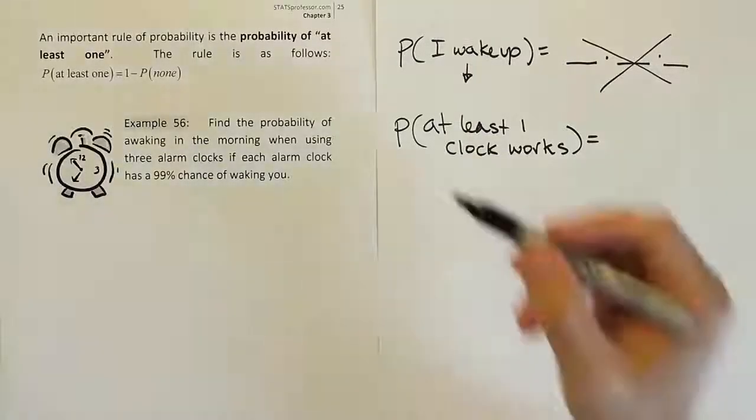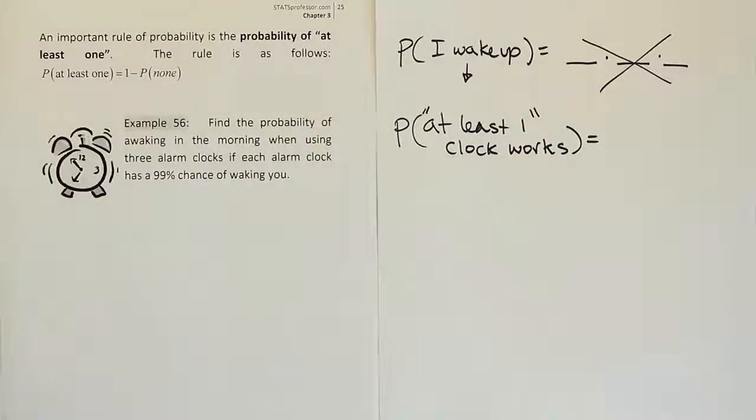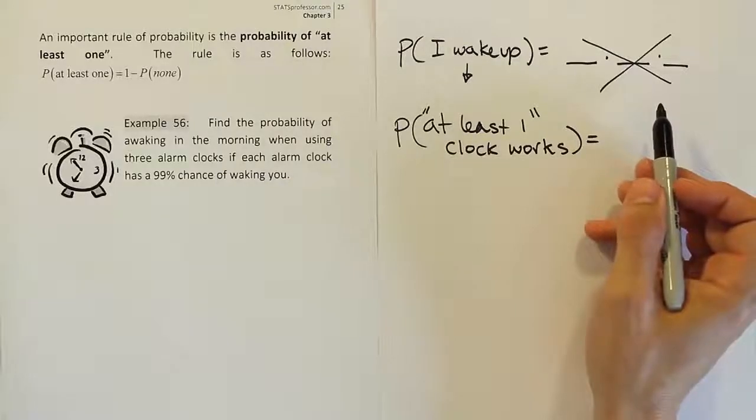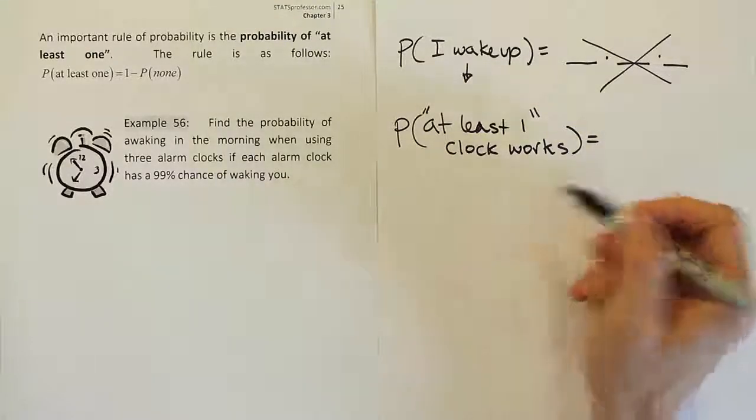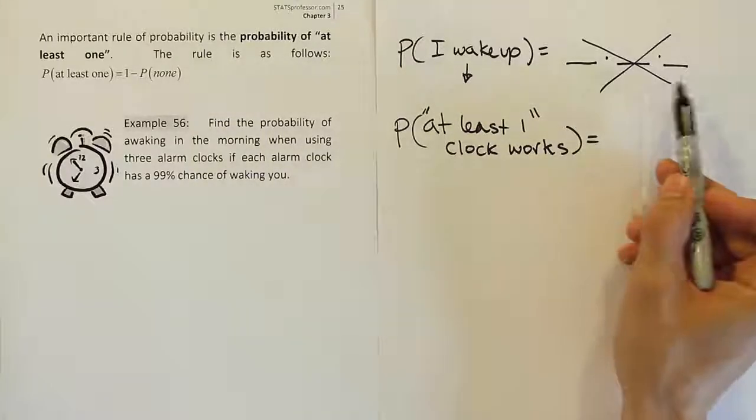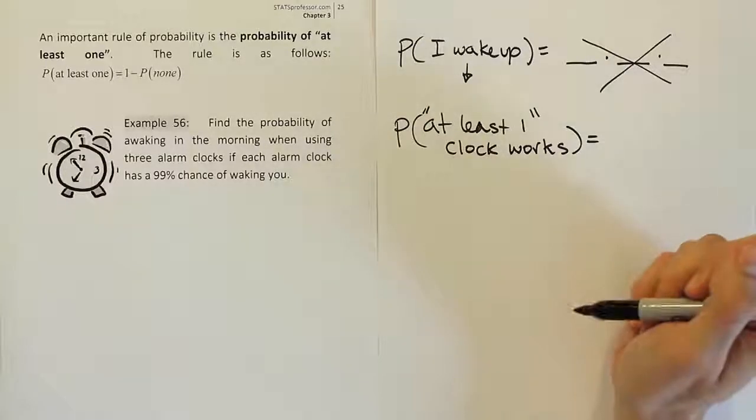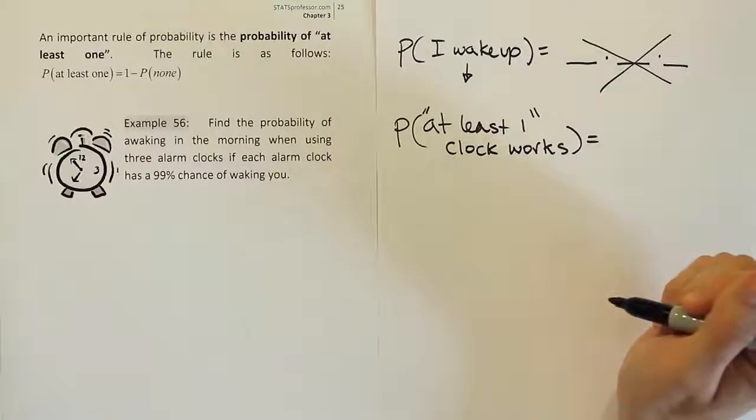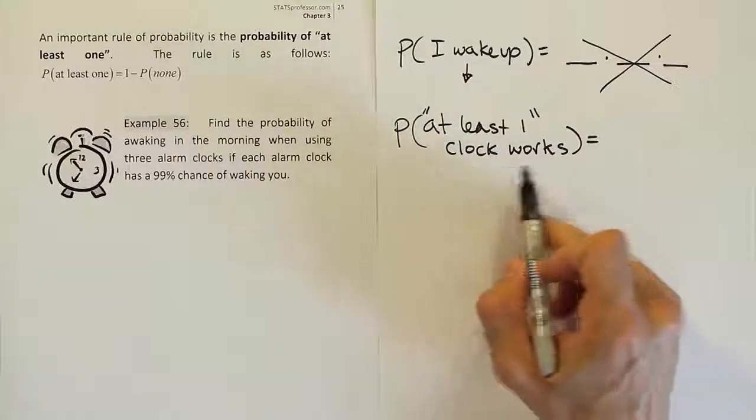If you want to go through those very quickly, let's do it. It would be the first clock working and the other two not. The second clock working and the other two not. The third clock working and the other two not. Or the first and the second work. Or the first and the third. Or the second and the third. Or finally all three work. Those are the seven different ways that we could wake up using three alarm clocks. So this statement actually captures all of those. And now the reason why this is very helpful is because we have a rule. The probability of at least one will help us solve this.